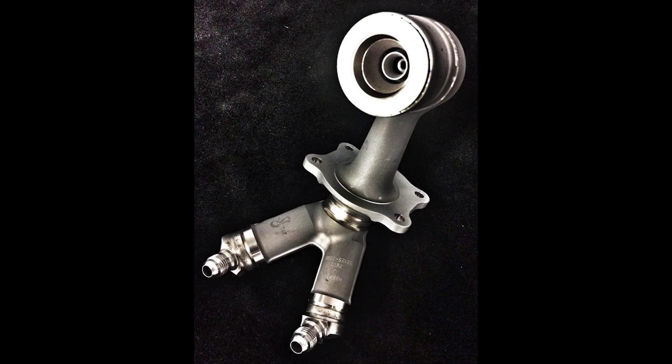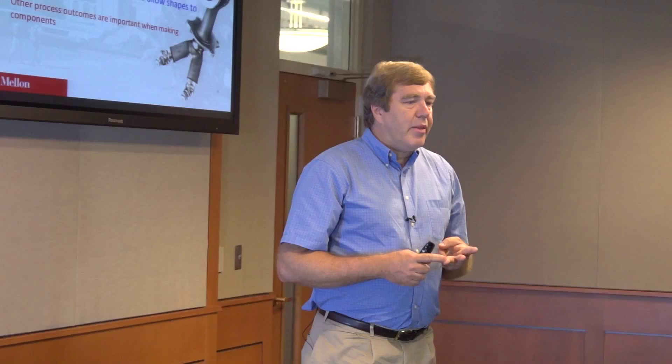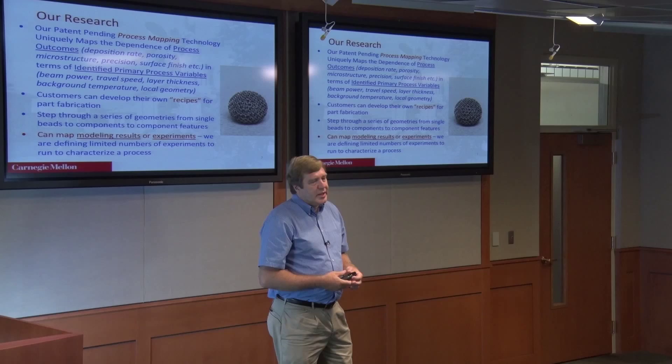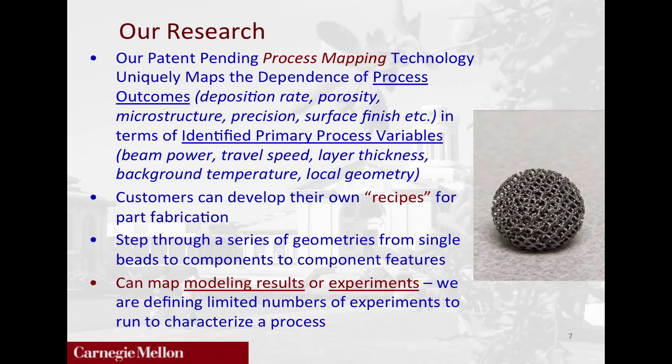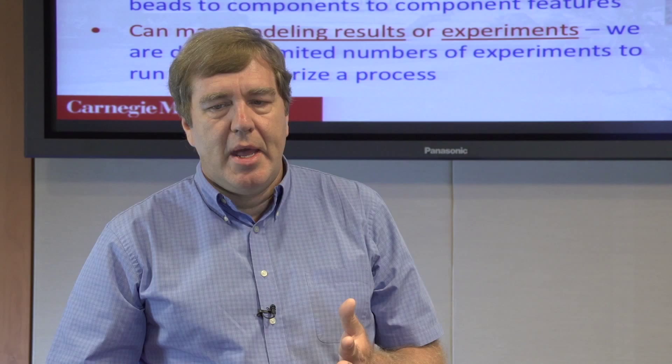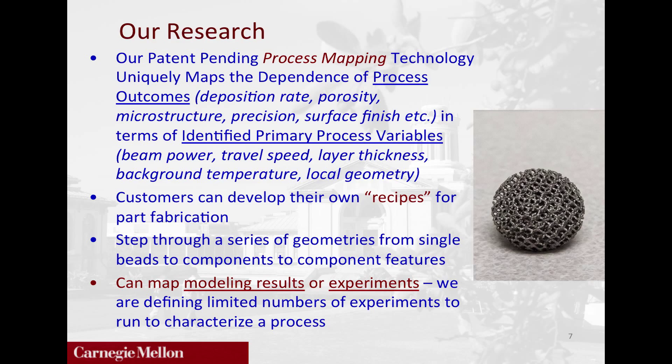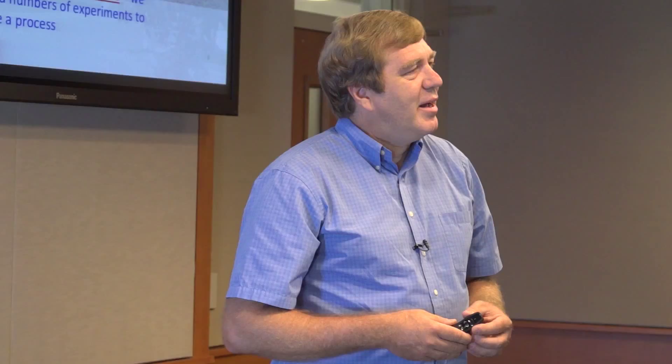The current processes — electron beam powder bed, laser powder bed, and other competing processes — have been developed to allow you to basically build shapes. That's how the process variables were worked out originally, experimentally. But there are many other process outcomes you'll want to control as a mechanical engineer using this as a manufacturing process. What we do is process mapping — we map out process outcomes not just for building a shape, but things like surface finish, microstructure, and control of porosity, in terms of primary process variables: beam power, beam travel speed, layer thickness, background temperature, and local geometry. We show customers how to manipulate the process to come up with their own recipes for building parts.